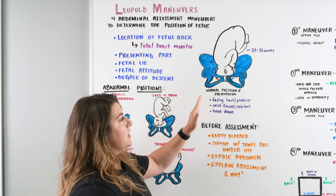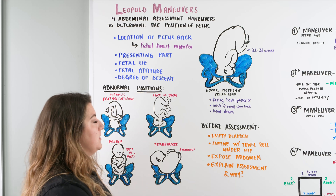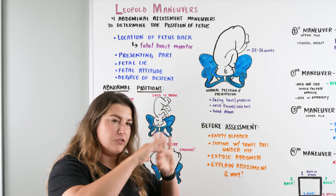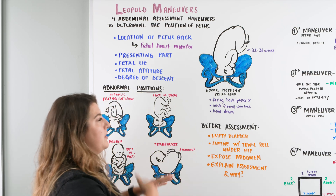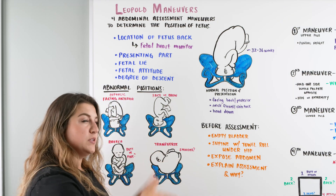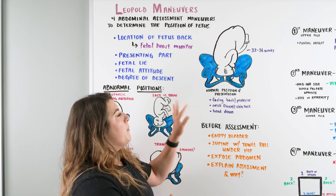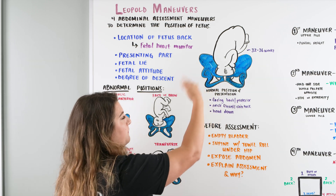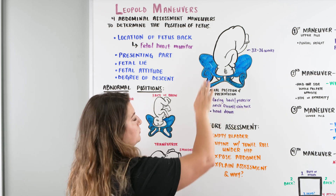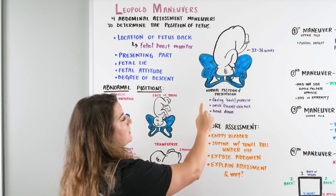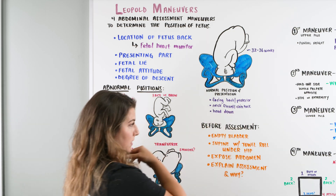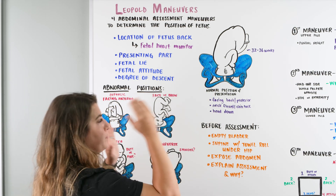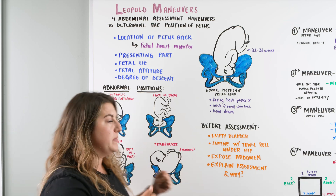It's easiest to know what the normal presentation and position is. Approximately 32 to 36 weeks is when we're going to do this. We're going to be looking for the baby facing back or posterior — so baby's going to be facing towards the back of mom. The neck is hopefully flexed and the chin is tucked in. We also have the head down, facing down. That position is the presentation that we want.